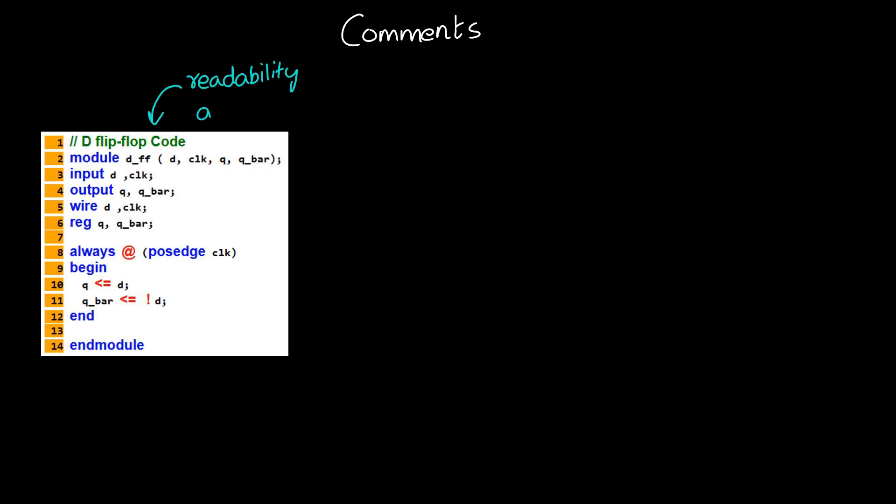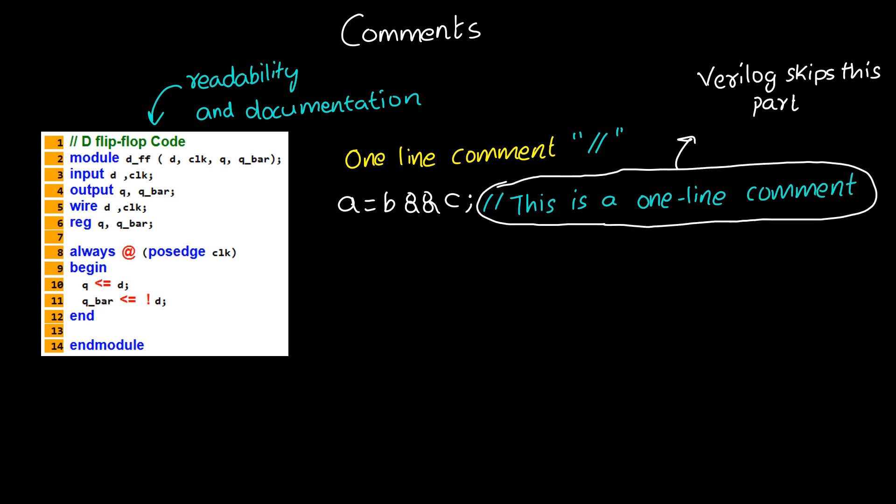Comments can be inserted in the code for readability and documentation. There are two ways to write comments. A one-line comment starts with forward slash forward slash. Verilog skips from that point to the end of line. A multiple-line comment starts with forward slash asterisk and ends with asterisk forward slash.